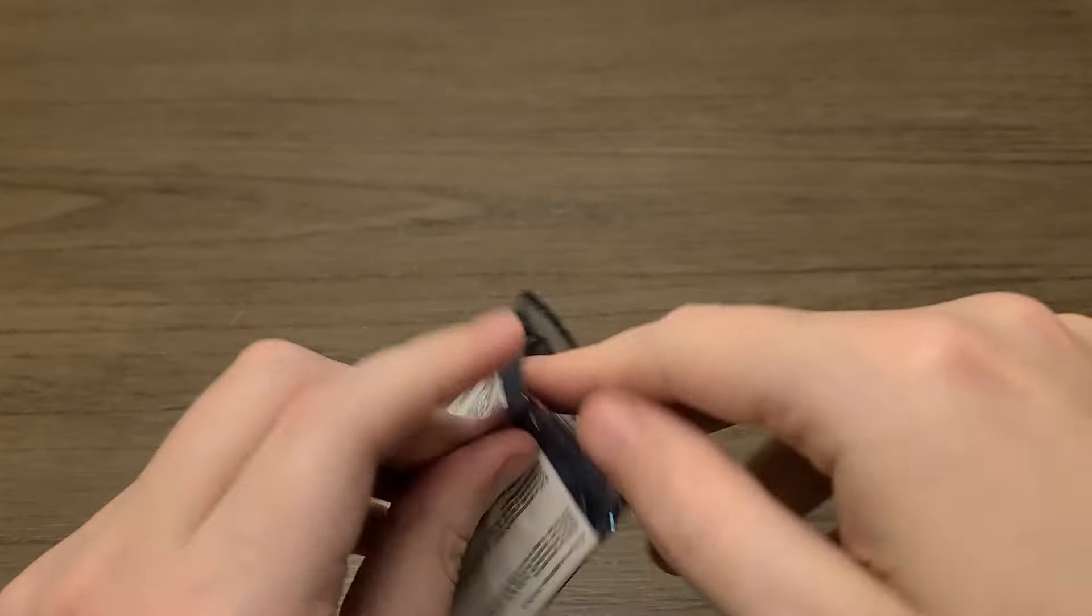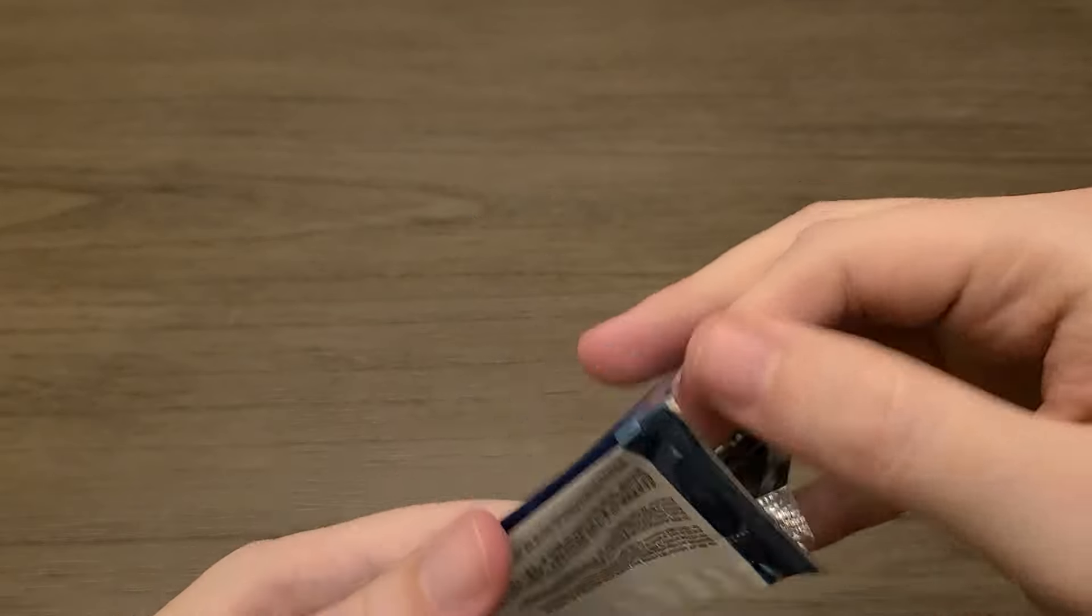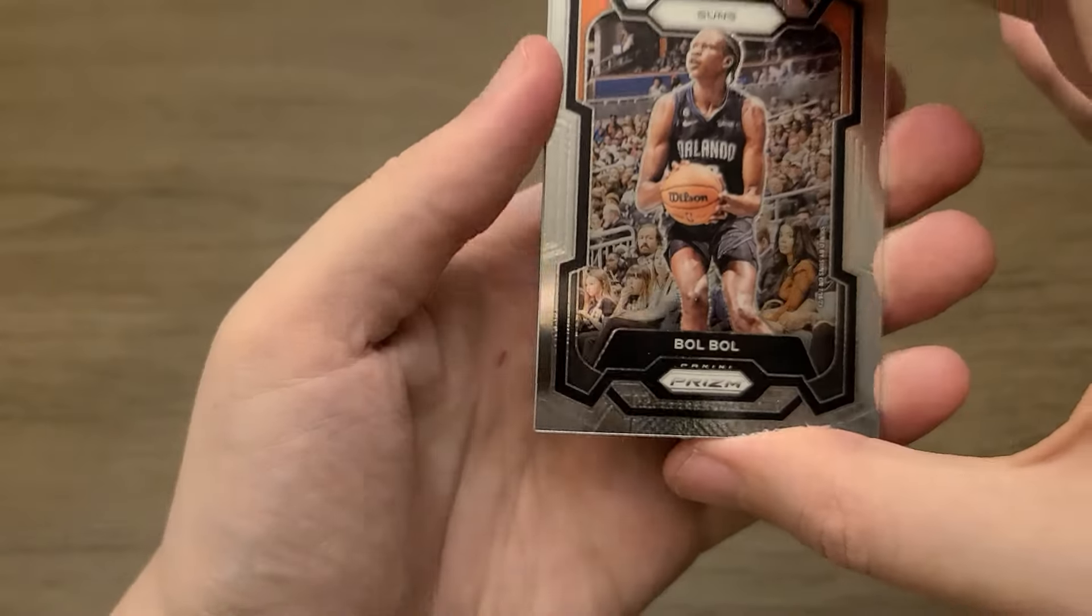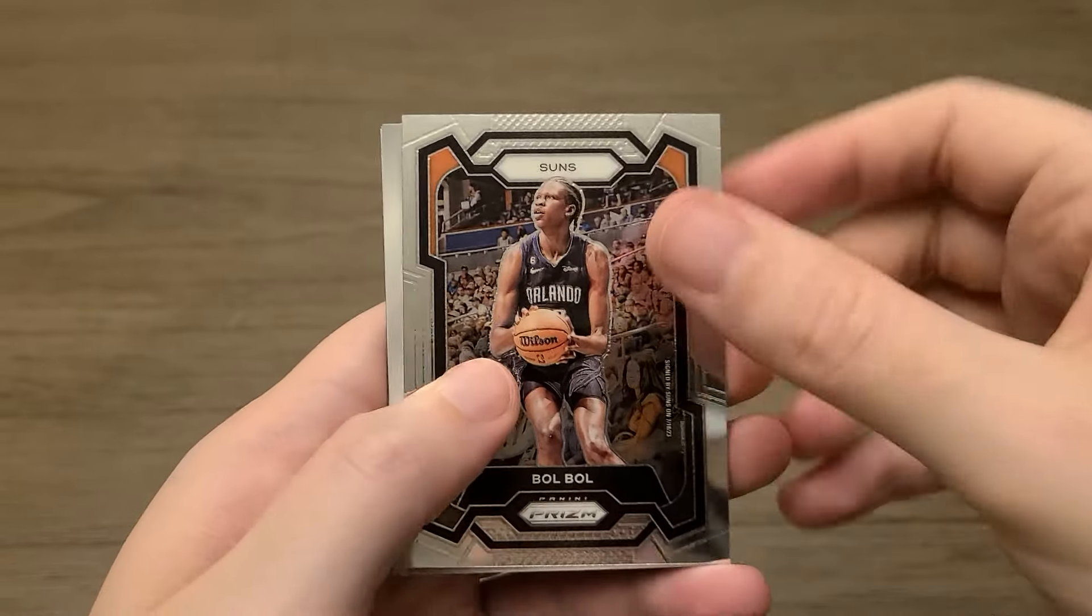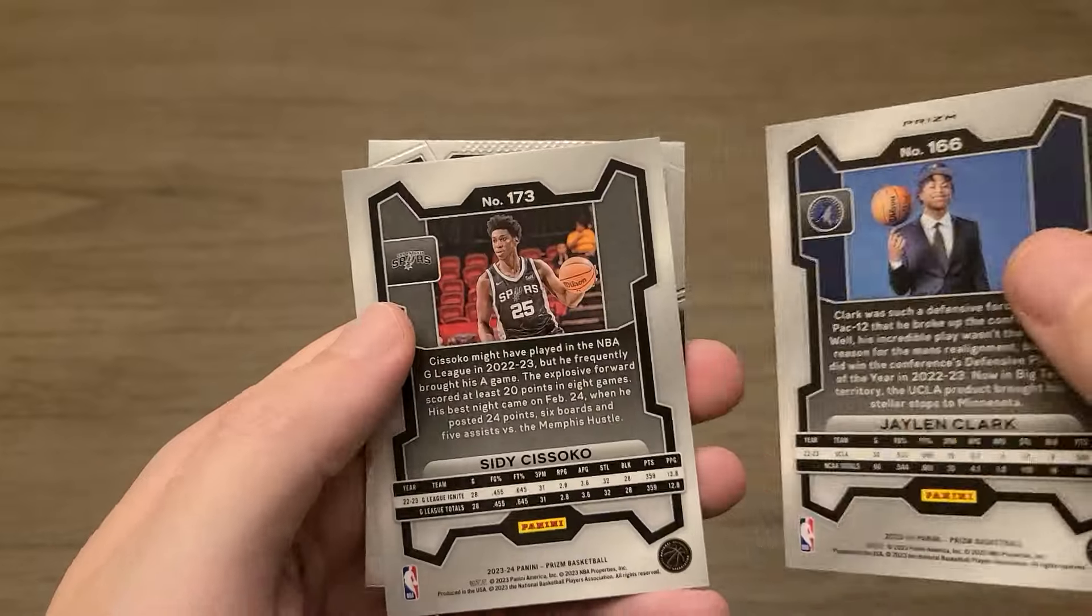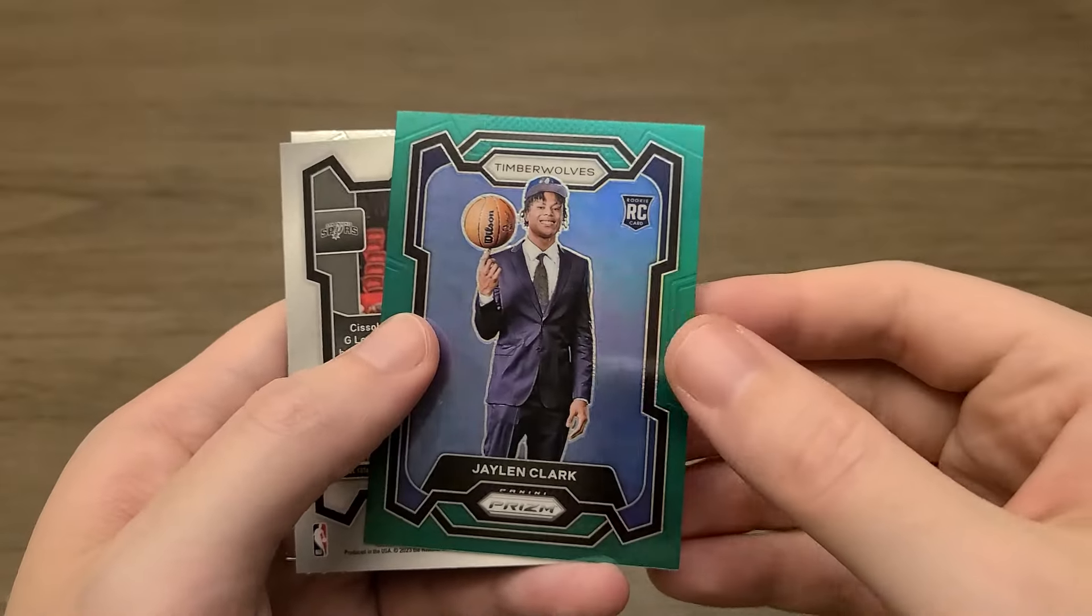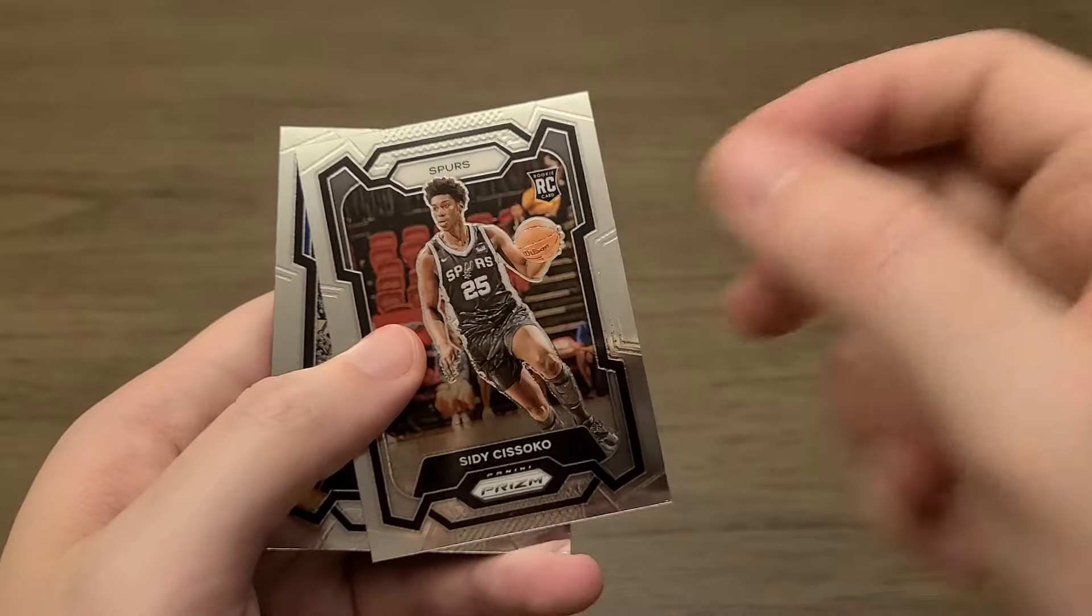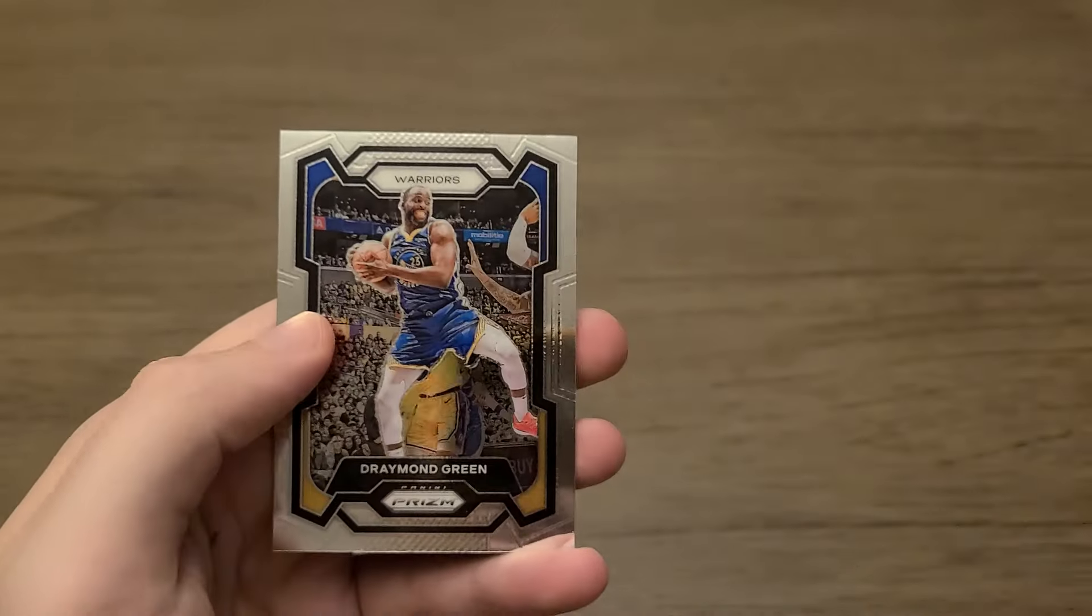Can we get some last pack magic? Again guys, thanks for tuning in. Thanks for sticking around and watching this 12, 13 minute video. It means a lot to me. Nothing big. Bol Bol. Alright. Jalen Clark Silver Prism. Oh, they faked me out again. Green rookie. I saw the Spurs. Unfortunately, it's the wrong player.